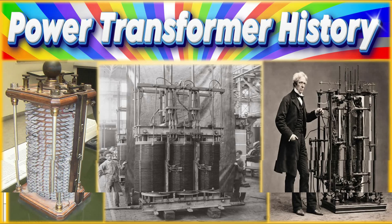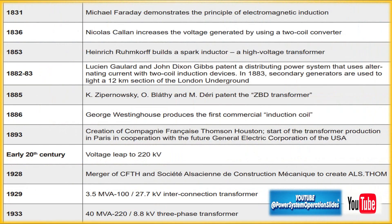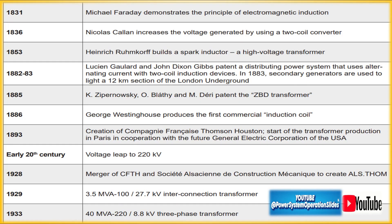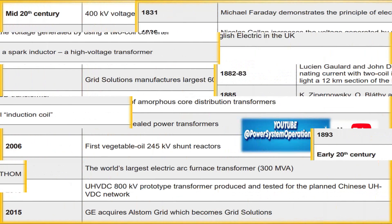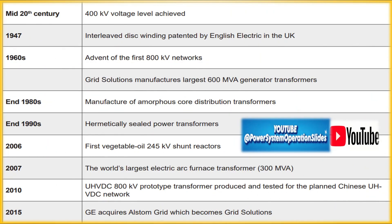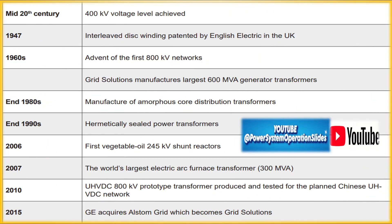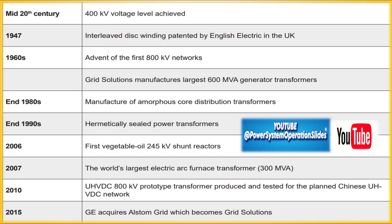The history of power transformers is rooted in the late 19th century during the early days of electricity. The development of transformers was a critical milestone that allowed the effective transmission and distribution of electrical power over long distances. Before the invention of the transformer, electrical power could only be transmitted over short distances due to the significant losses incurred during transmission.